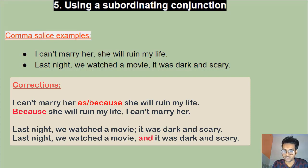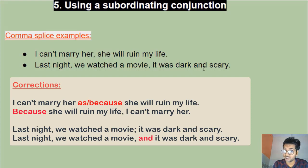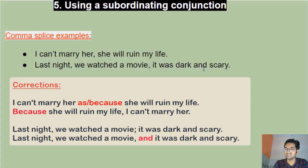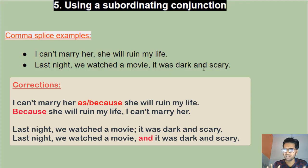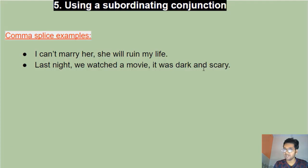You can also bring the dependent clause to the beginning: 'Because she will ruin my life, I can't marry her,' or 'Since she will ruin my life, I cannot marry her' — with a comma after the dependent clause. For the sentence 'Last night we watched a movie, it was dark and scary,' the most logical fix is the coordinating conjunction 'and' — you don't have to forcefully use a subordinating conjunction.